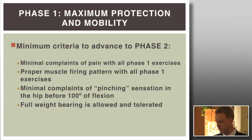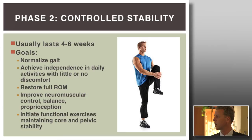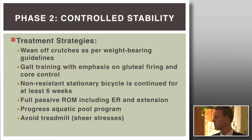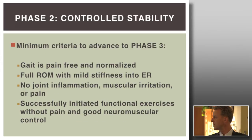Phase two is the controlled stability phase, usually lasting four to six more weeks. Goals include normalizing gait, achieving independence with daily activities, restoring full range of motion, and improving neuromuscular control, balance, and proprioception. Patients are weaned off crutches based on weight-bearing guidelines. Focus on gluteal firing and core control. Non-resistive stationary bike continues through at least the first six weeks. Aquatic therapy can begin after wounds have healed. Treadmill use should be avoided.